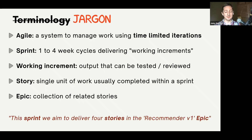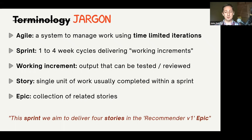A story is a single unit of work usually completed within a sprint — for me, that's 20 minutes to a few days of work. An epic is a collection of related stories, which is a really nice way of organizing your work. If we've got the epic 'improve the marketing team's data capacity in Q3 2021,' and we can see all related epics from the last couple of years, I'm laying the breadcrumbs for future data science teams to understand what's been done before — enabling reproducible data science.